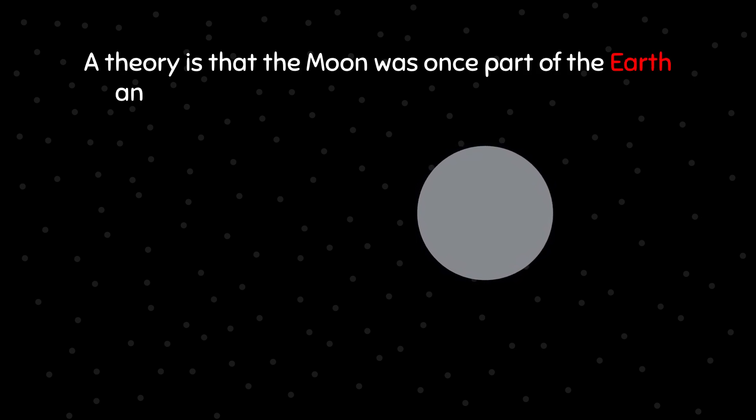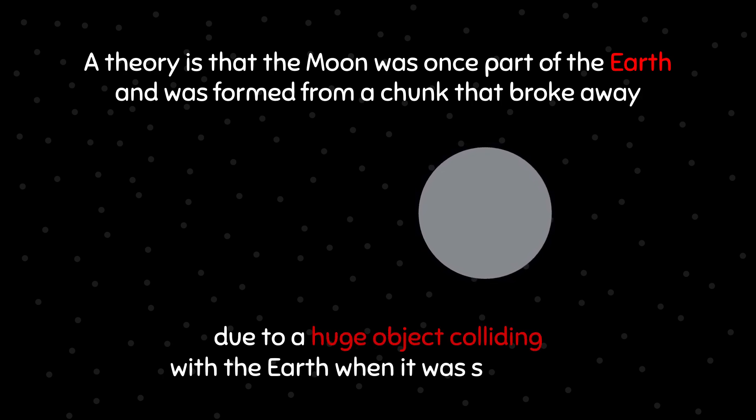The Earth and the Moon. Both the Earth and the Moon are about the same age. A theory is that the Moon was once part of the Earth and was formed from a chunk that broke away due to a huge object colliding with the Earth when it was still young.